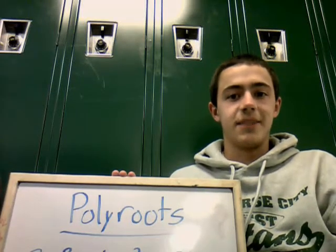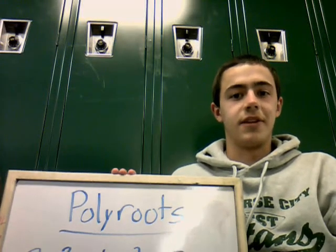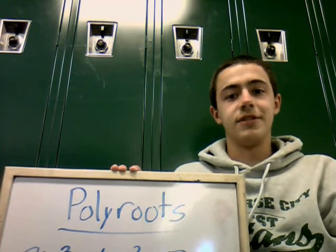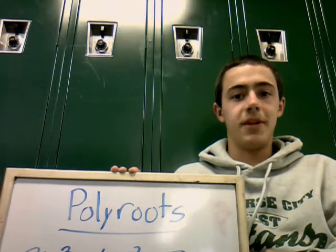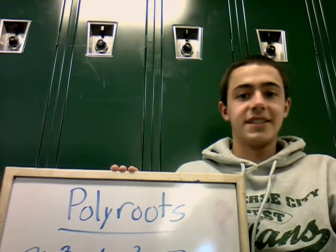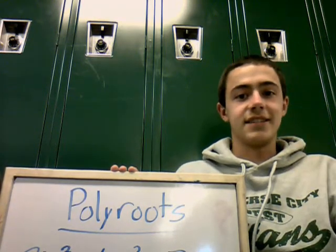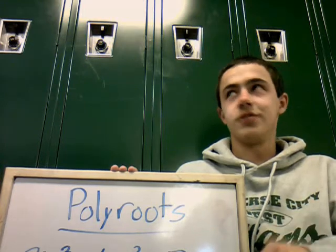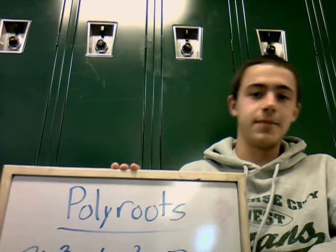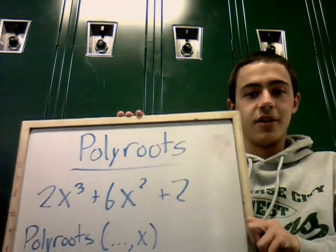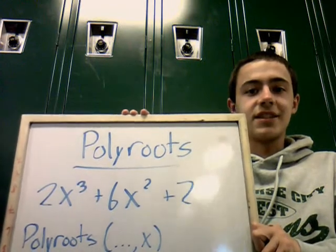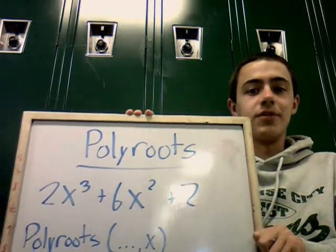Many of you may be sitting in a math class wondering how to find the poly root in an equation. The poly root is where the equation crosses the x-axis, and in some situations it may not cross the x-axis. Look at this equation here: 2x cubed plus 6x squared plus 2.